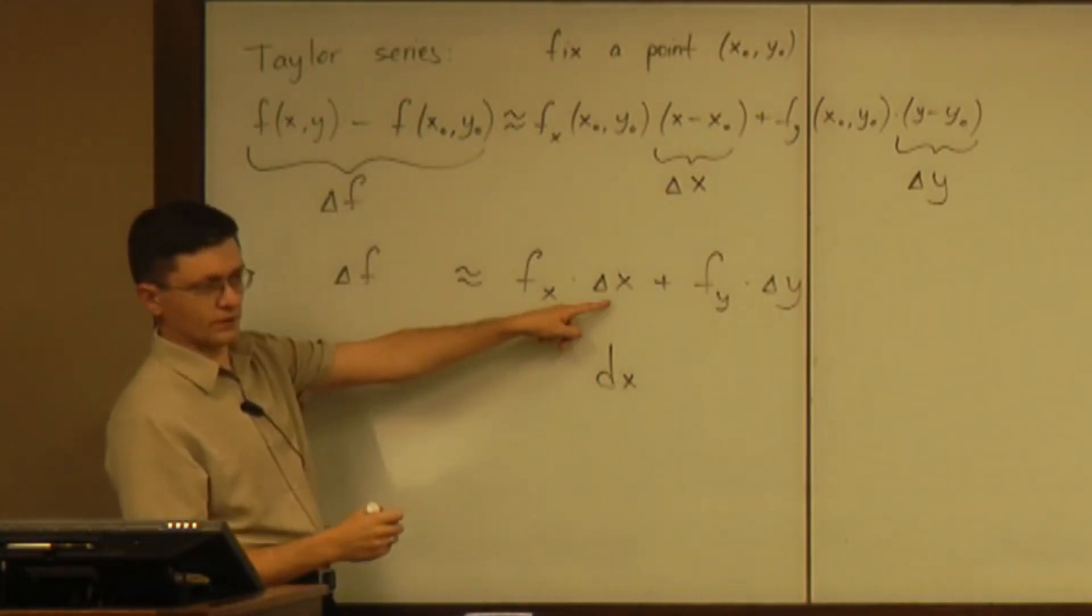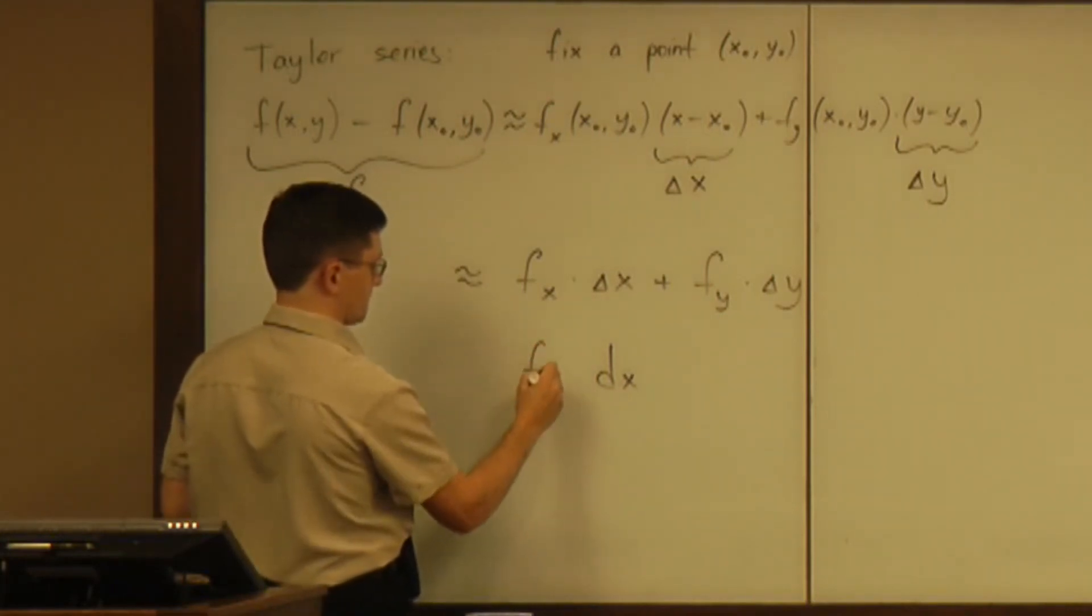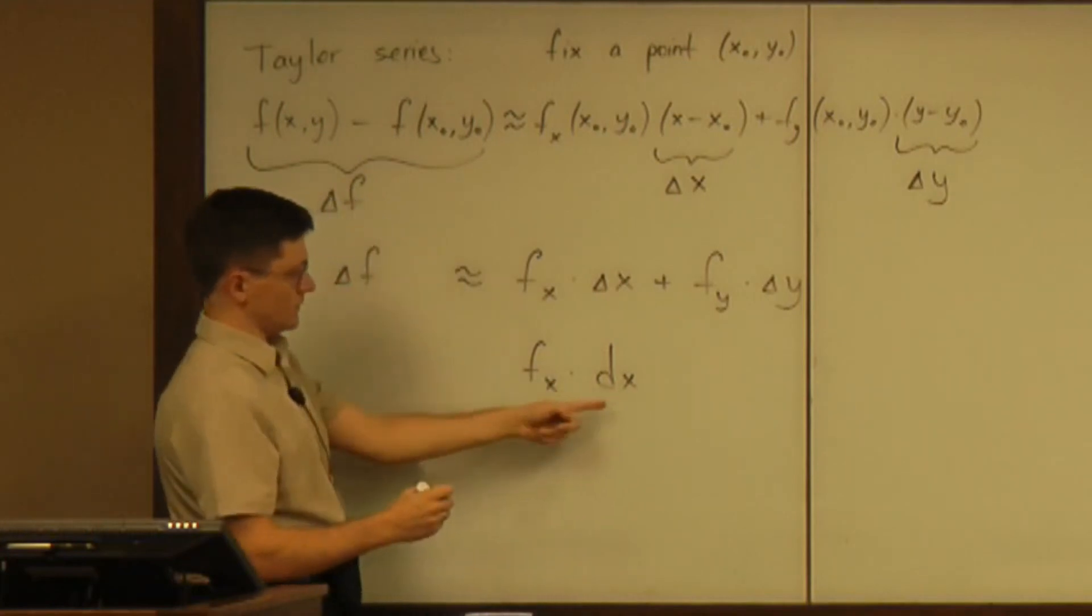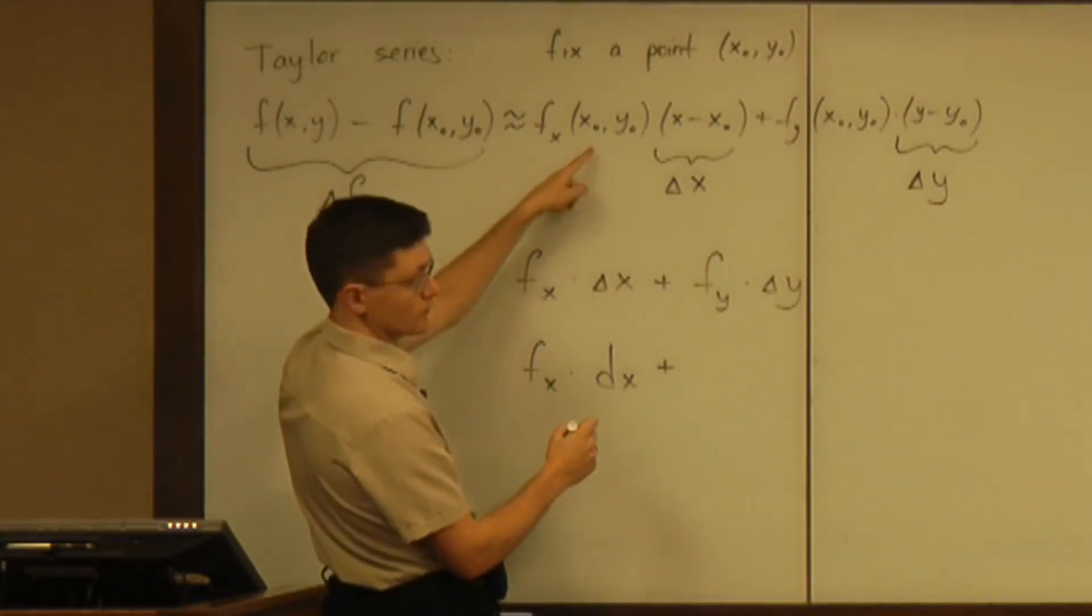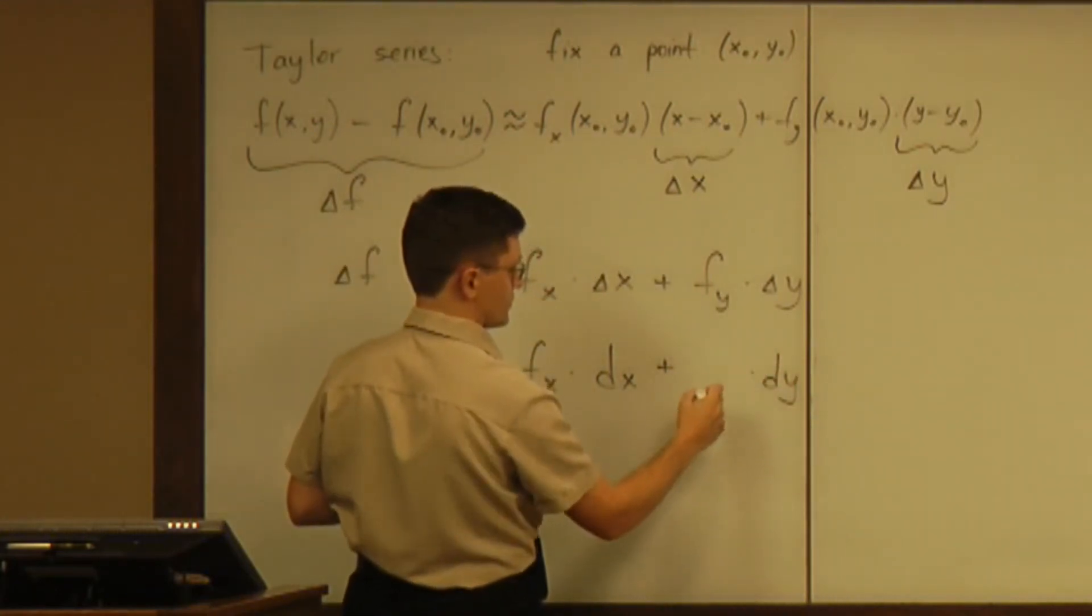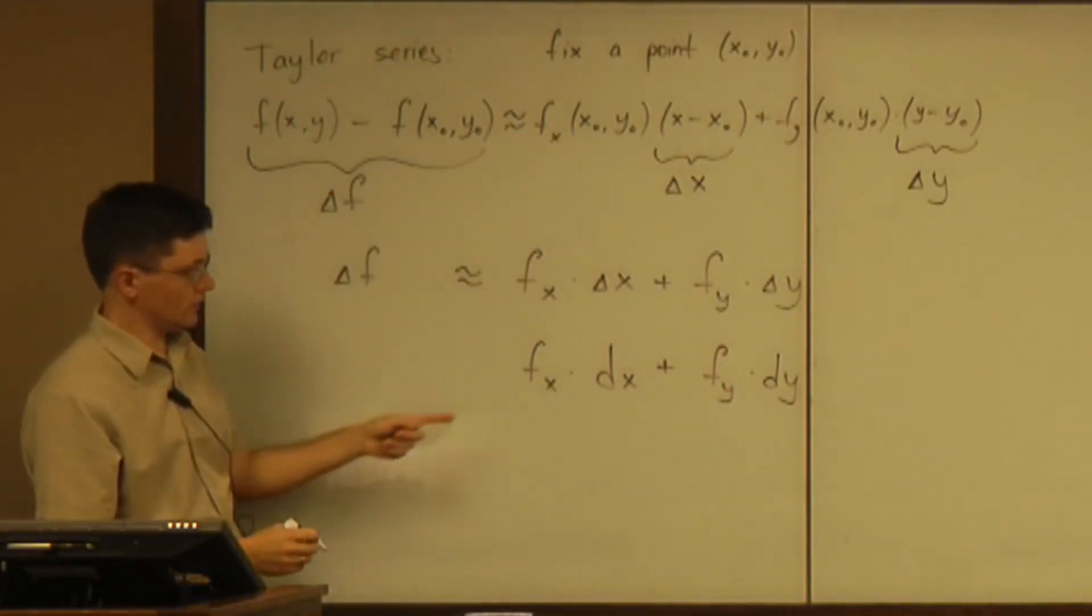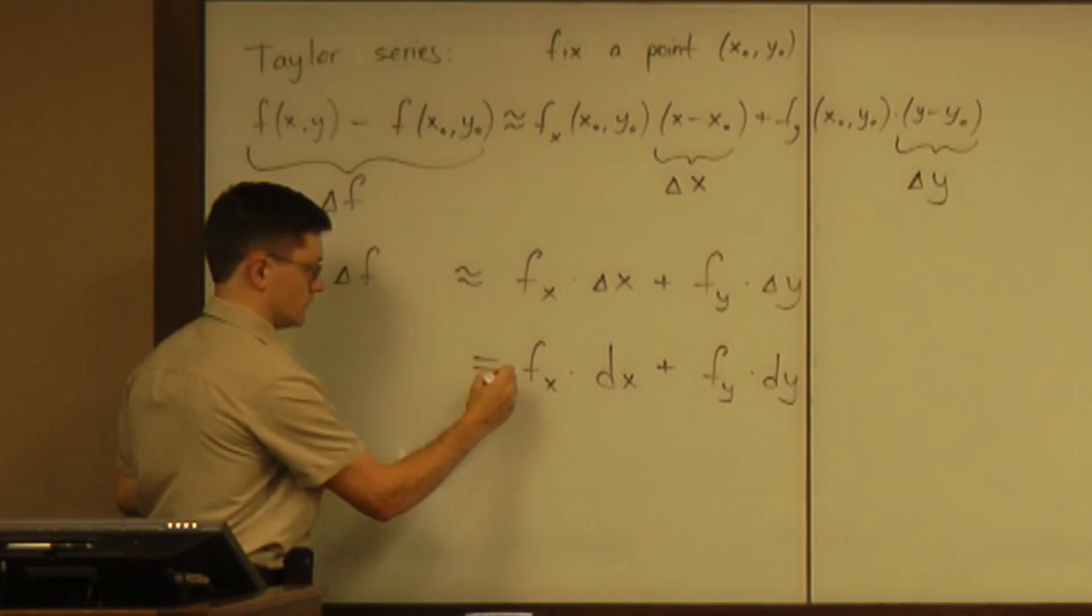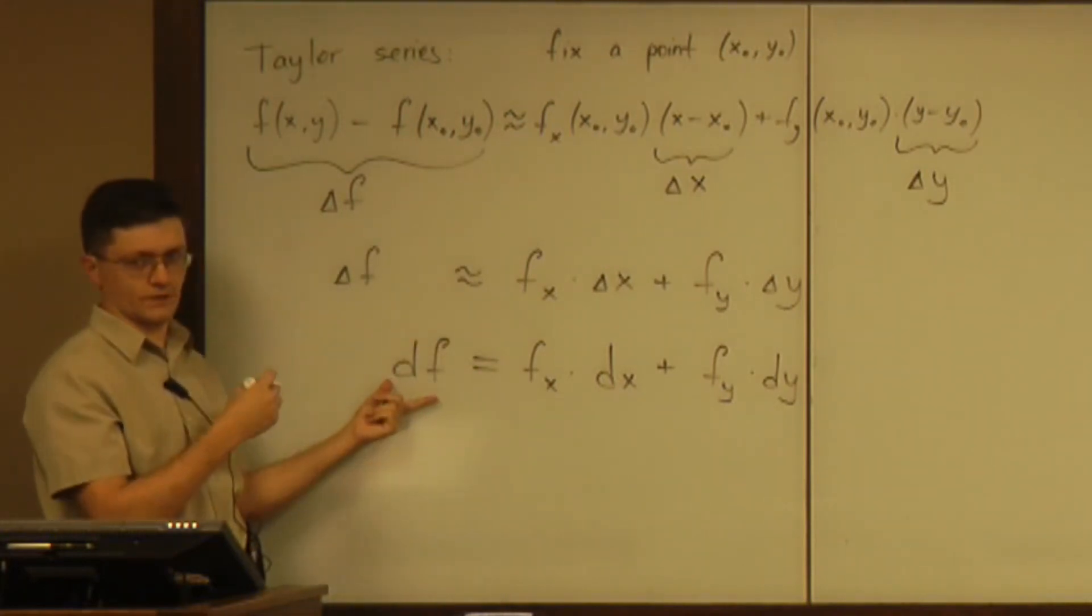For independent variable, as before, we say that differential is the same thing as the change. No practical difference. So if you multiply that differential by the partial derivative at that point, and you multiply the change of y, differential of y by the partial with respect to y, then this quantity is called the differential of f.